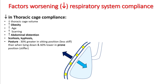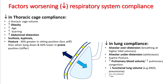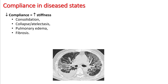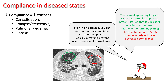Respiratory system compliance depends on both thoracic cage and lung compliance. Thoracic compliance worsens with obesity, scarring of thoracic walls, increasing abdominal distension such as ascites, scoliosis, kyphosis, and in prone position. Decreased lung compliance is seen in both alveolar overdistension and underdistension, supine posture, increased blood volume, decreased functional lung volume, loss of surfactant, and aging. In diseases with consolidation, collapse, pulmonary edema, and fibrosis, compliance is worse. Even in these disease states there can be areas of normal compliance.